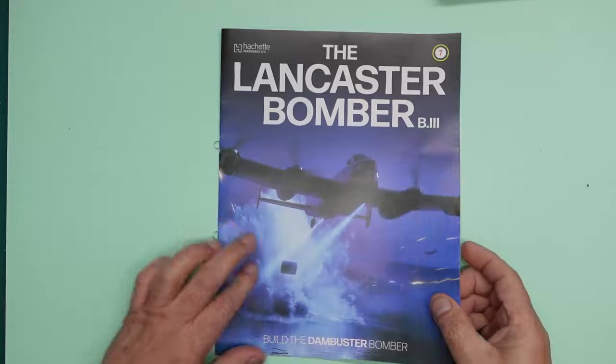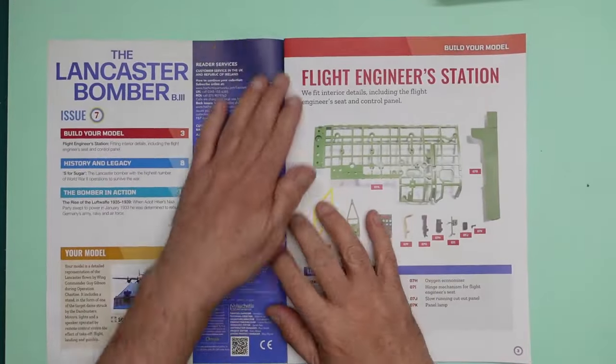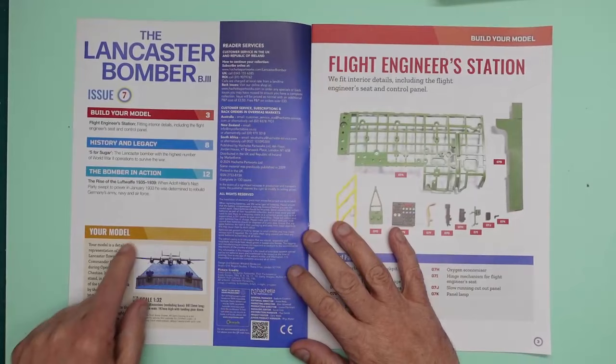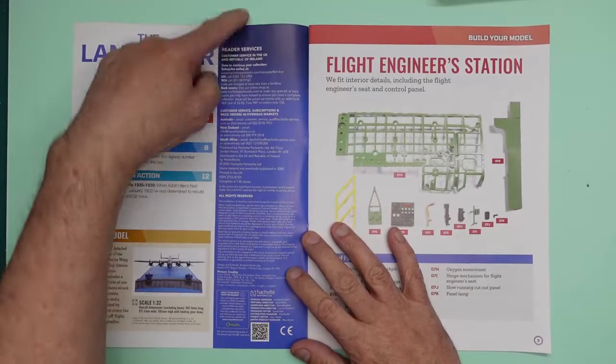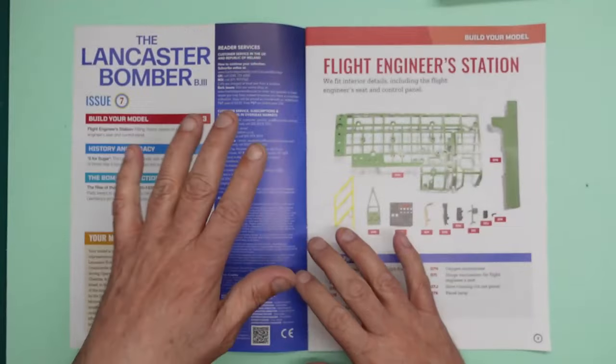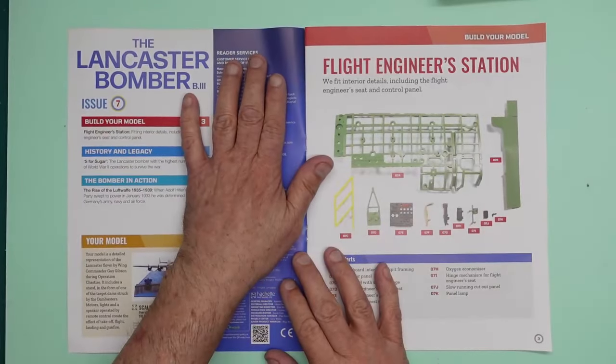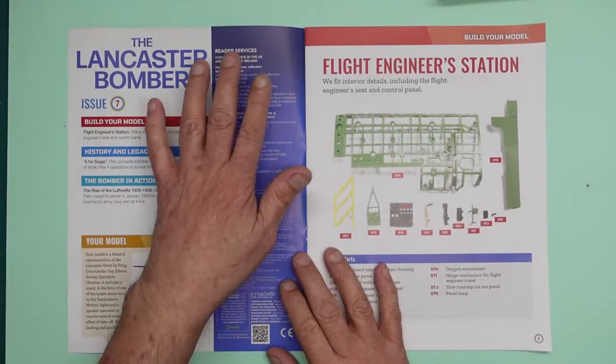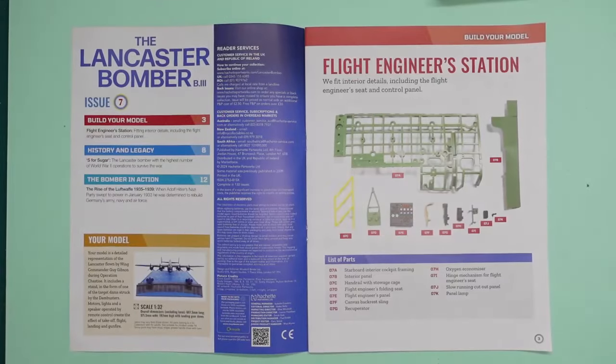I'll turn the light down. What have we got in here? As usual, we've got an image of the model on its base and everything. We've got all the contacts here for customer services. I am hearing from you guys with your comments that the customer services at Hachette are absolutely second to none. That's really good to hear.